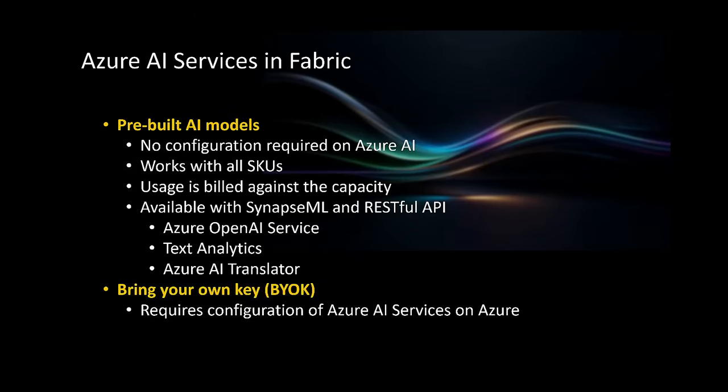Also, the features available right now are not the full set you will see once it becomes generally available. How does this integrate with Microsoft Fabric? There are two ways you can access Azure AI services in Microsoft Fabric. The first option is pre-built AI models. The second option is bring your own key. The first option — pre-built AI models — is the recommended way of accessing these AI services.